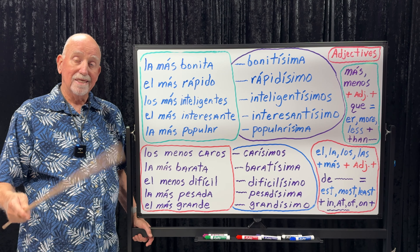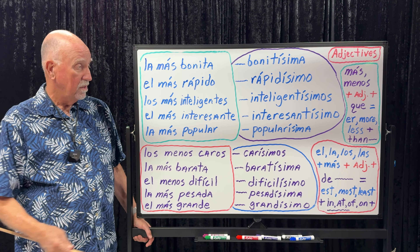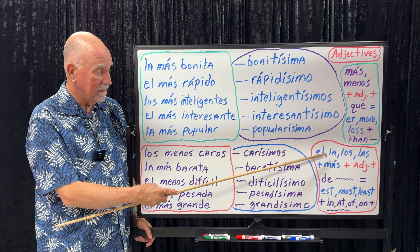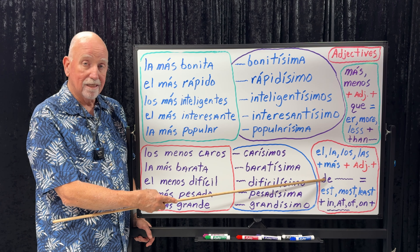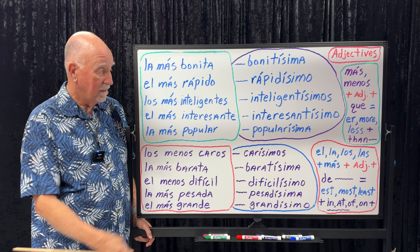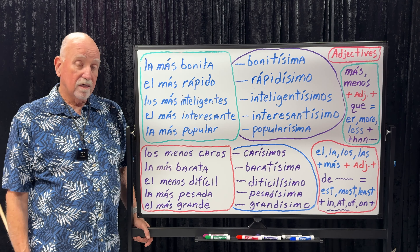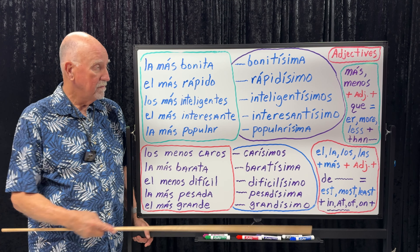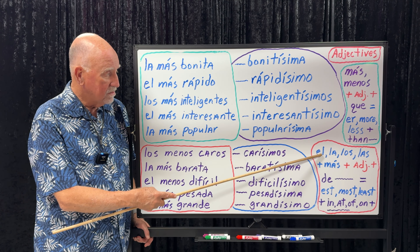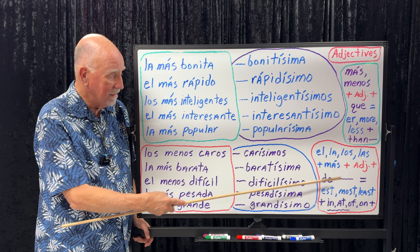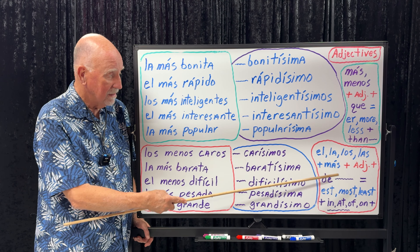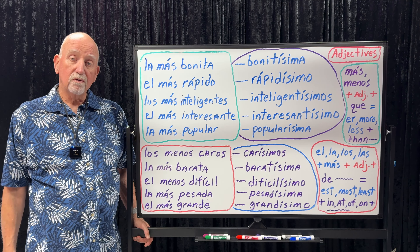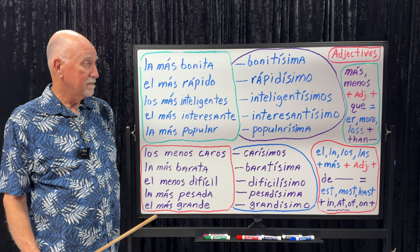For example: the prettiest girl in the school — la chica más bonita de la escuela. The strongest boy on the team — el chico más fuerte del equipo. It's always a de phrase.